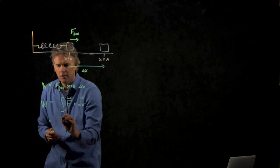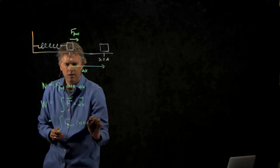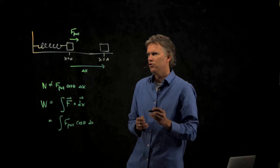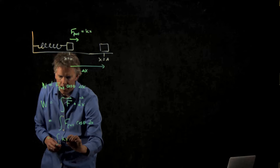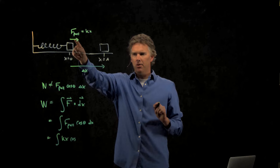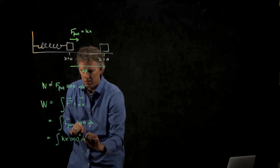So we've got integral of f pull cosine theta dx. But we know that f pull just has to be as big as the spring force itself, kx. And so this whole thing becomes integral of kx cosine of the angle between them. What's the angle between f pull and delta x? Zero. Cosine of zero is one.